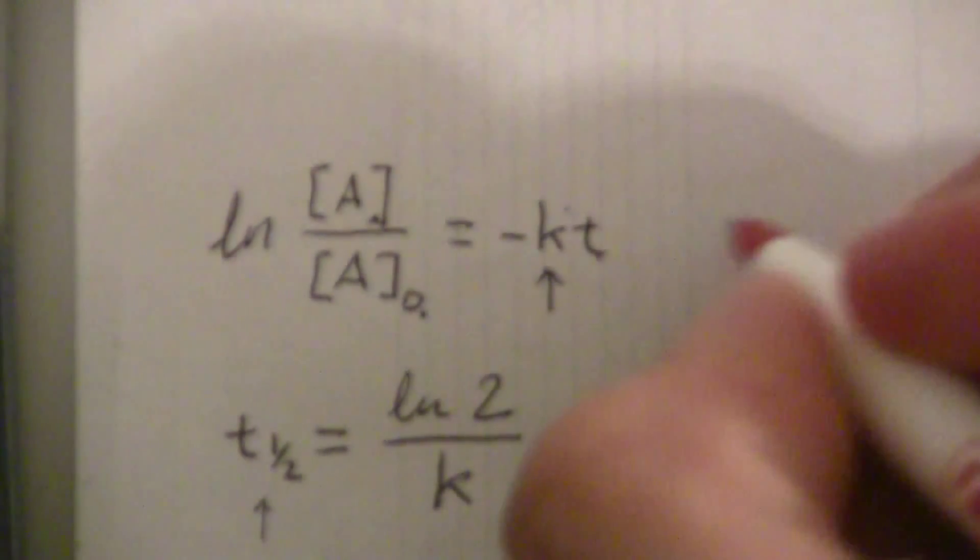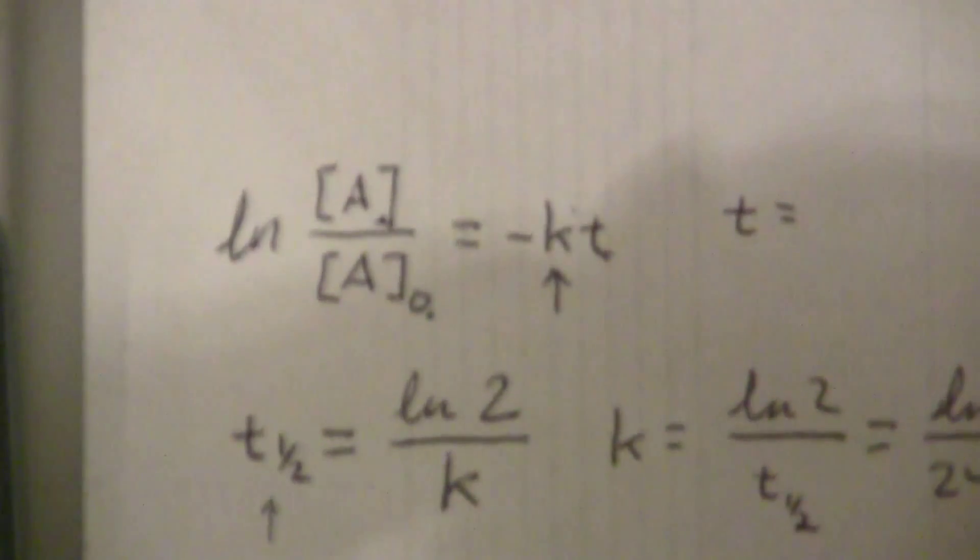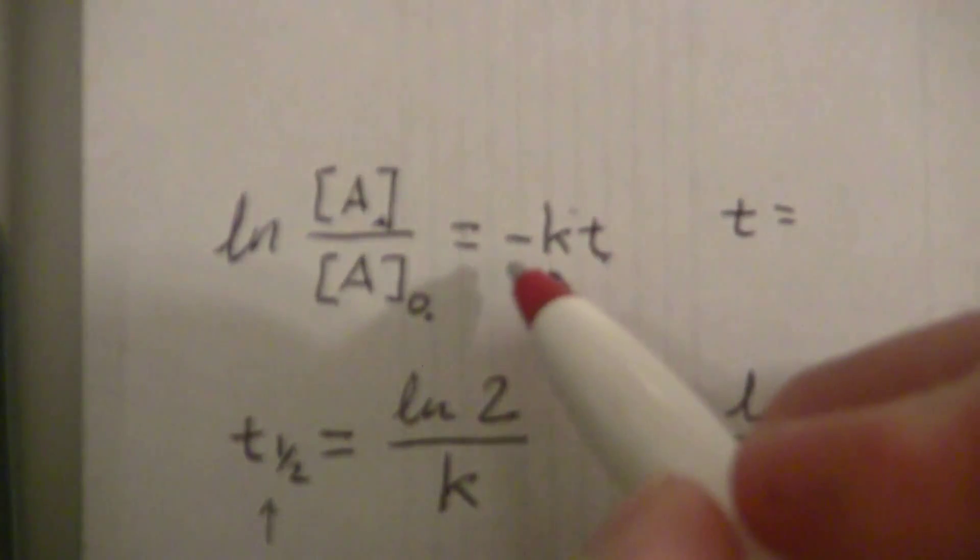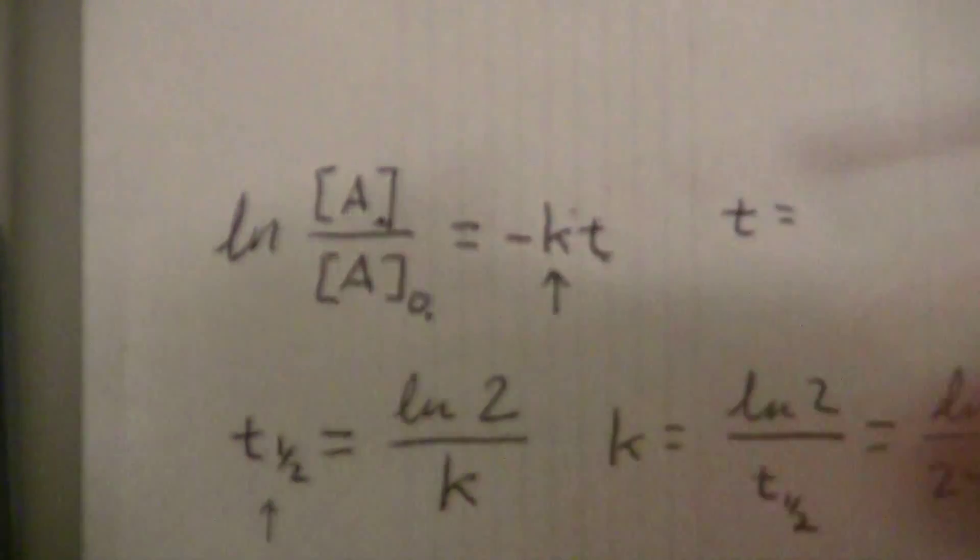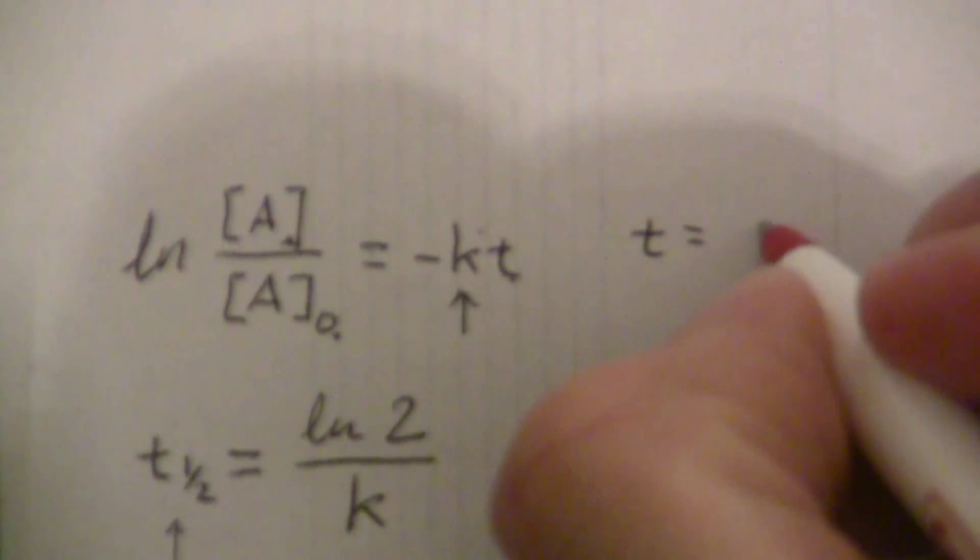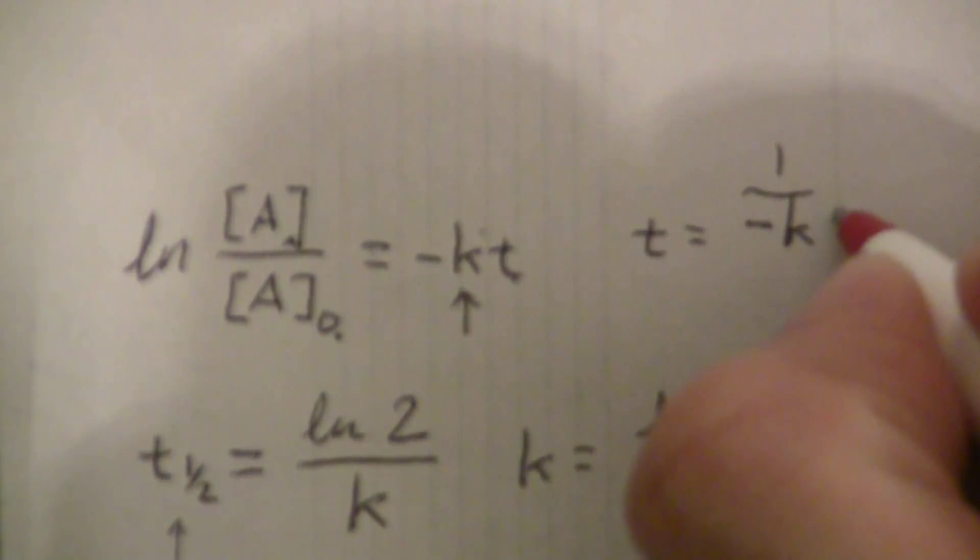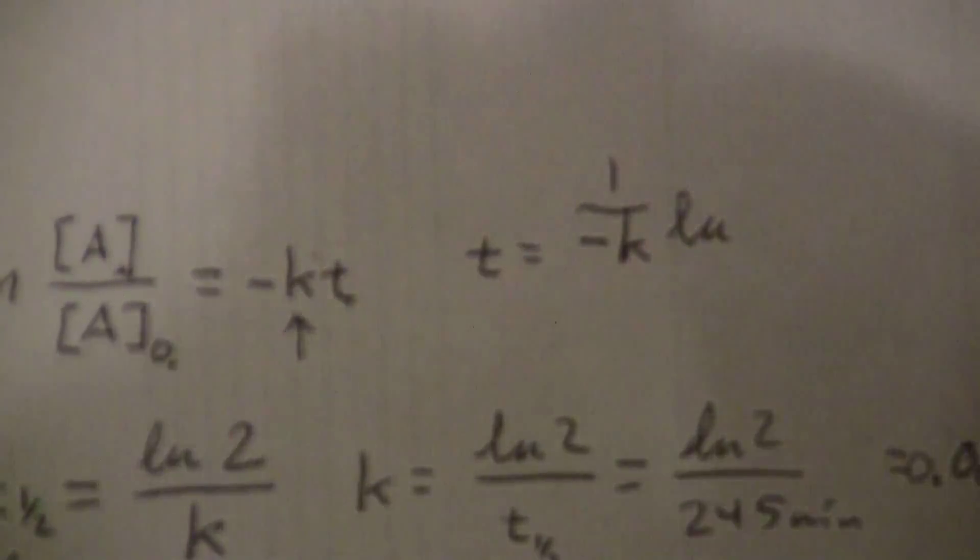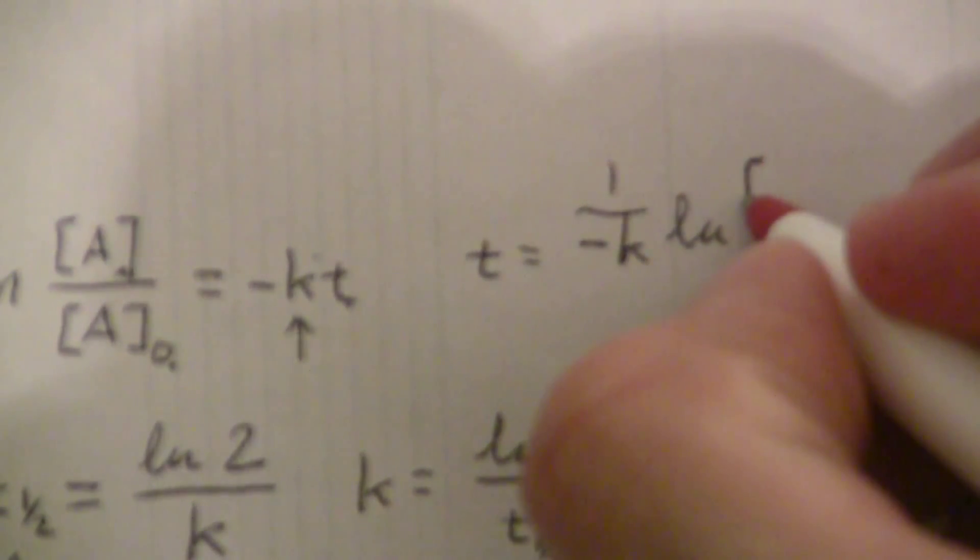So now, let me go ahead and solve this for time, I'm just going to divide by negative K, so I'll just put that out in front like this. So I'll have my 1 over negative K times the natural log of A over A naught.